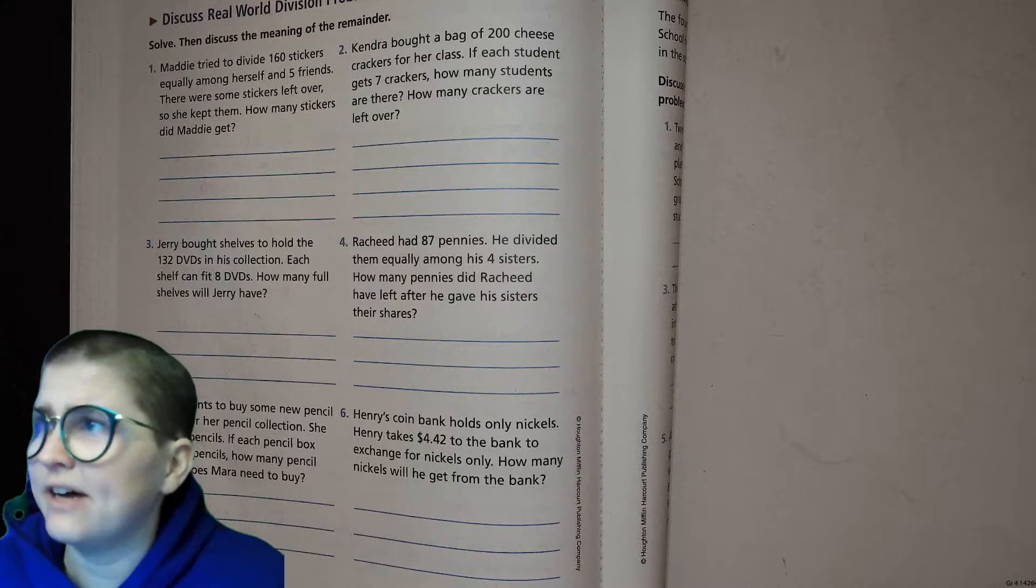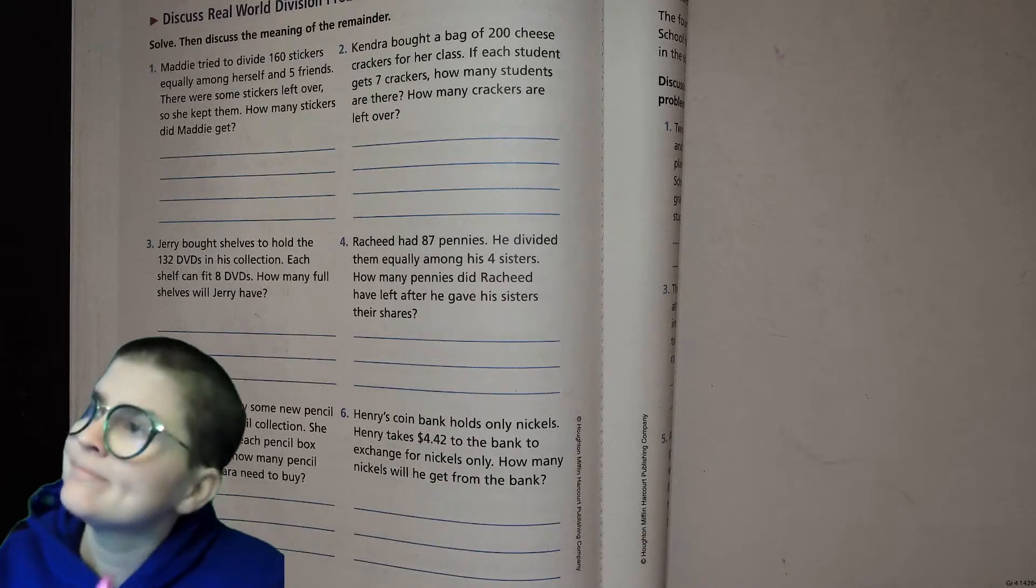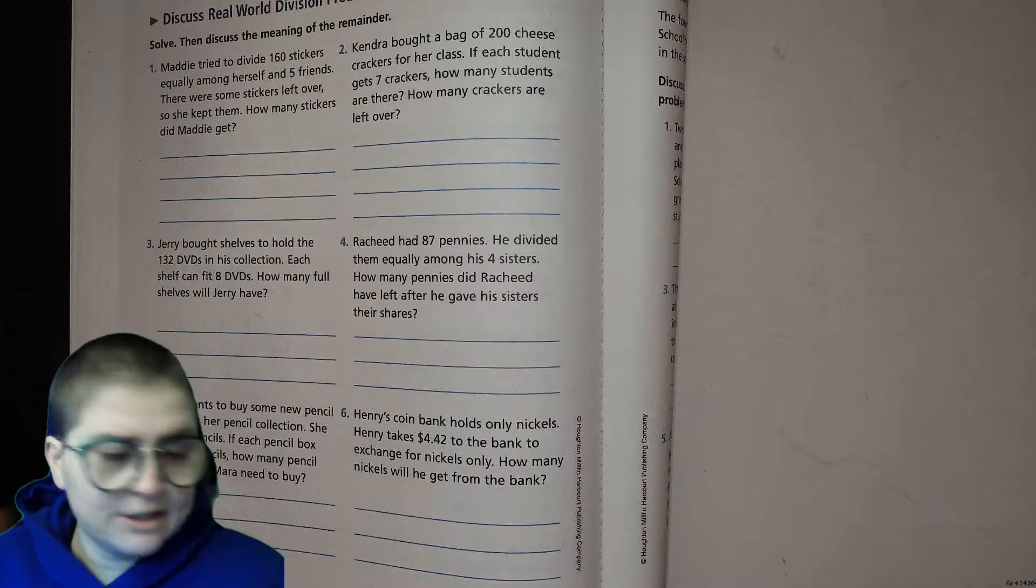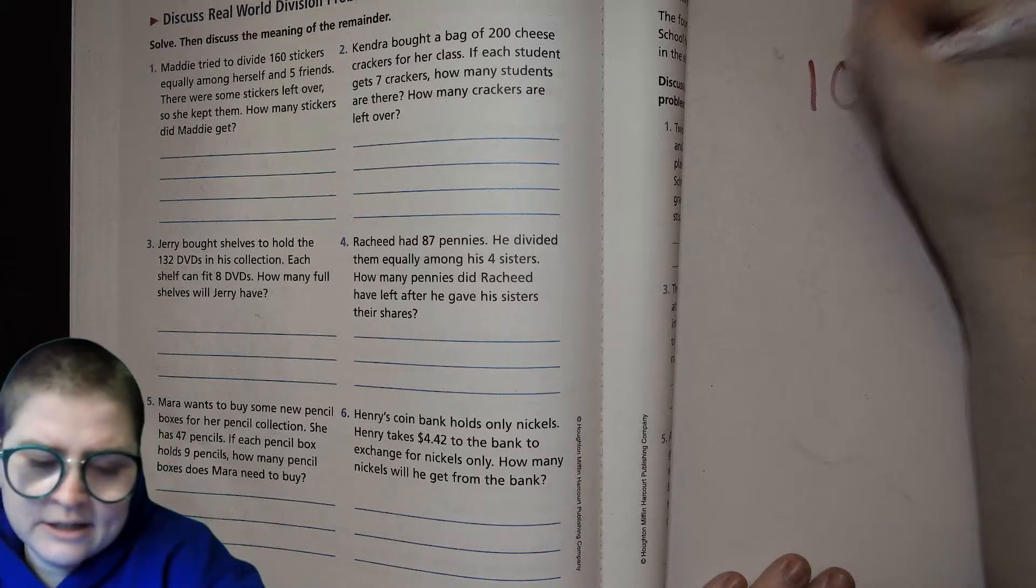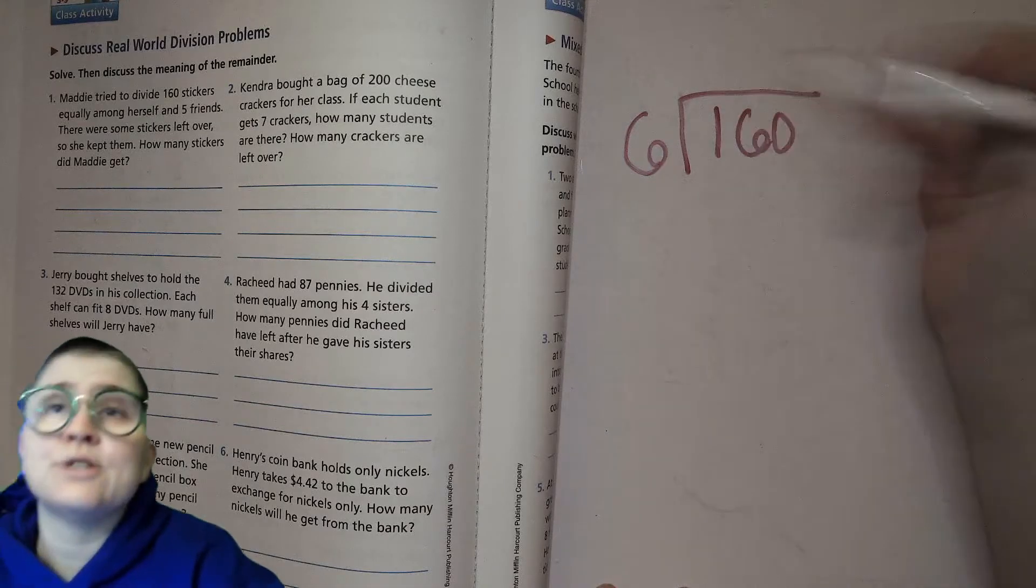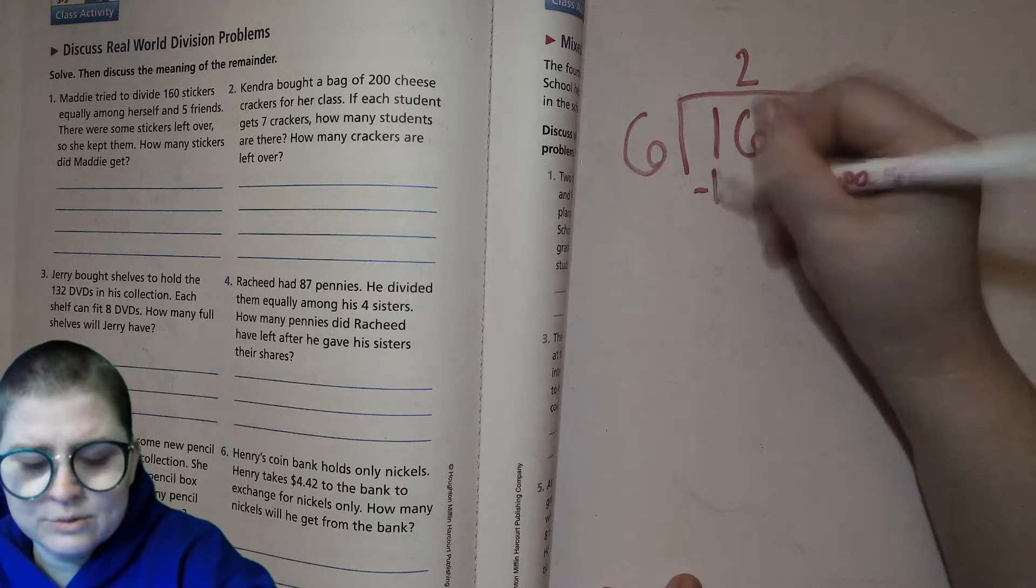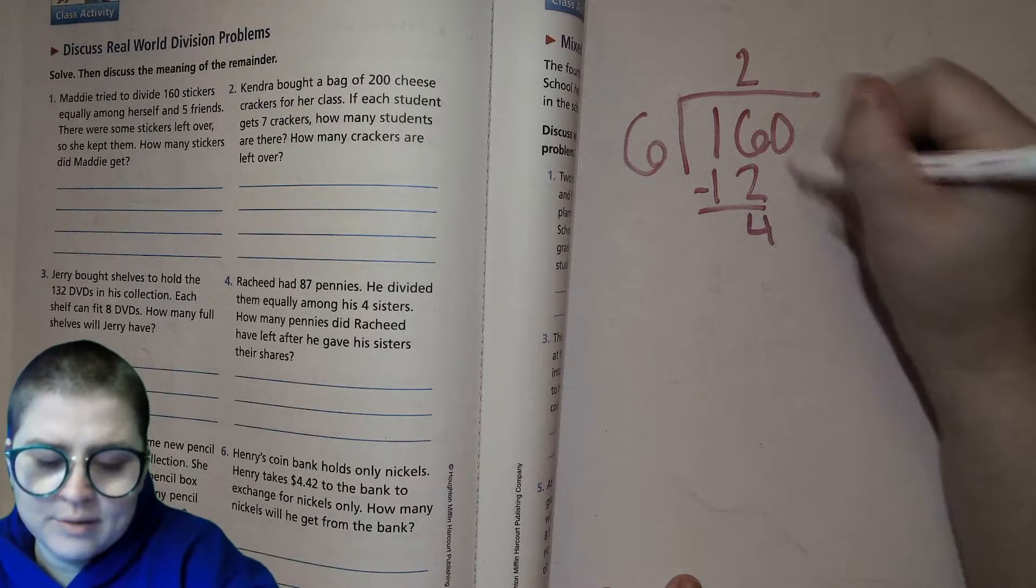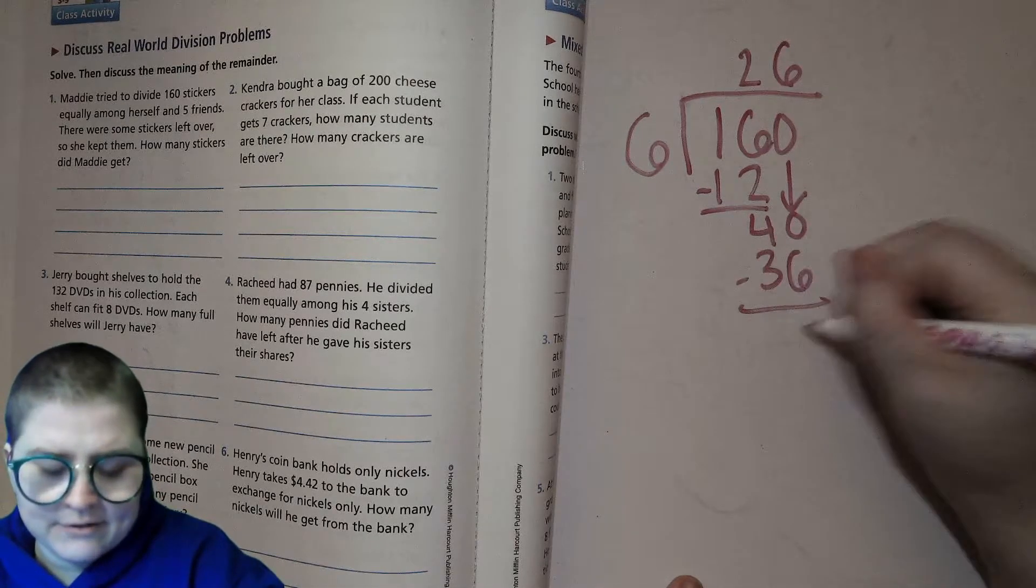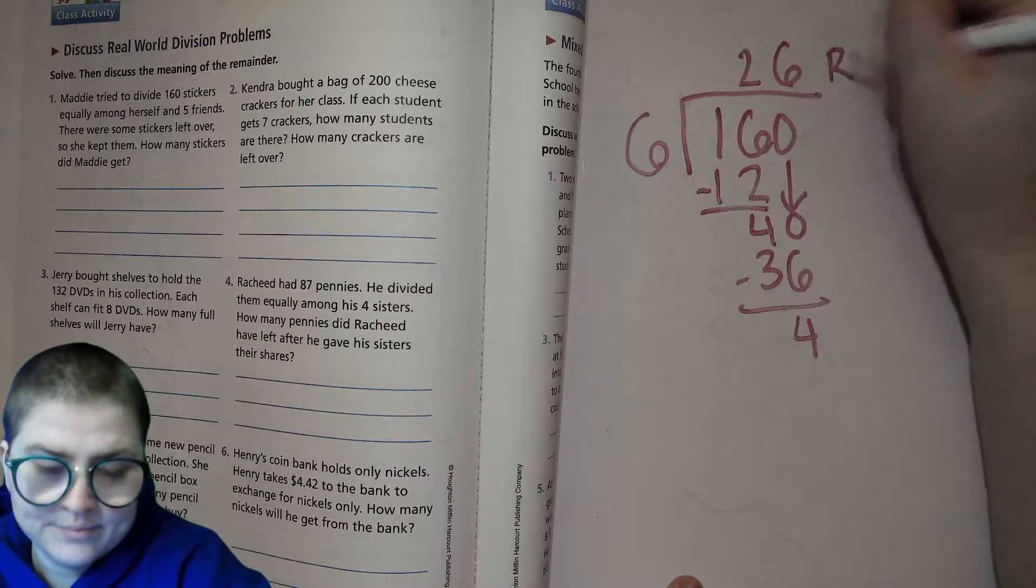Number 1: Maddie tried to divide 160 stickers equally among herself and five friends. That's herself and five friends, that's how many people? Six, right. So I have my math board here. We're gonna solve it over here: 160 divided by 6. Six goes into 1 not really, 6 goes into 16 two times. 2 times 6 is 12, subtract, bring it on down 4 and bring it on back, 40. 6 times 6 is 36, and then we have 4. So 26 remainder 4.